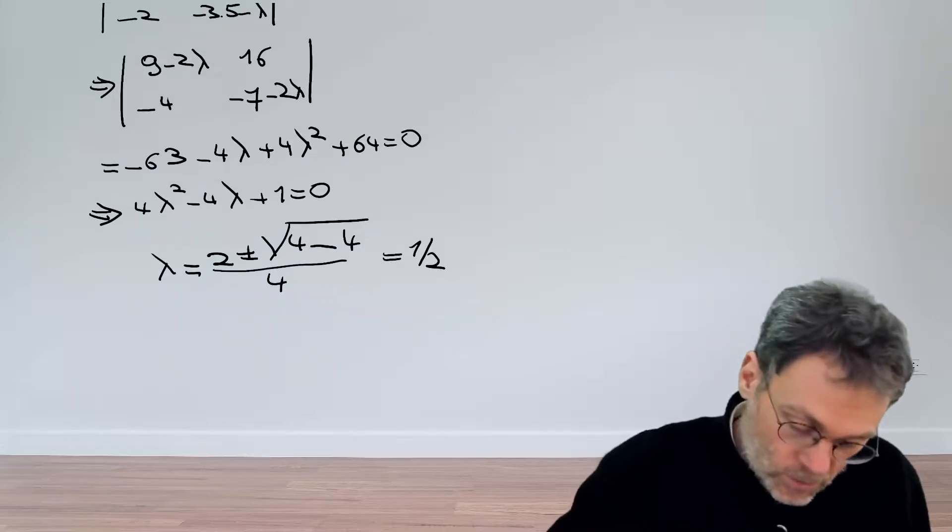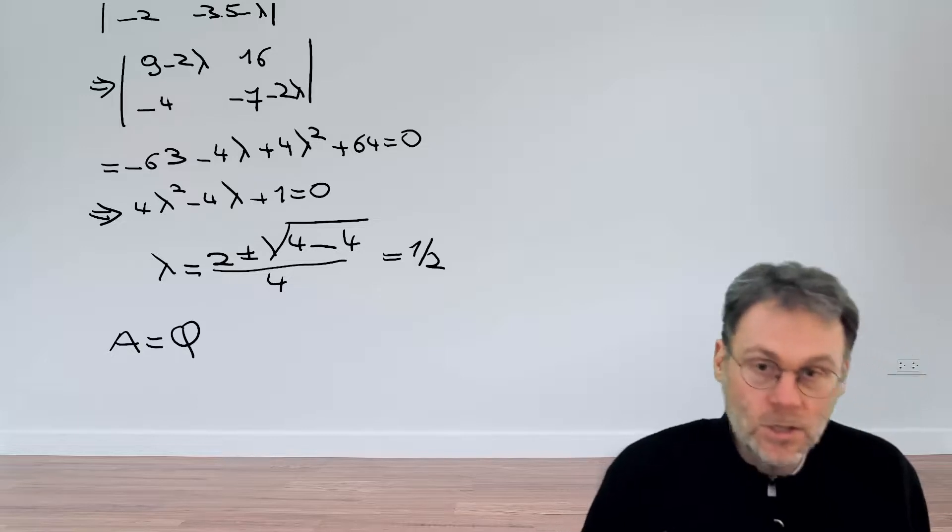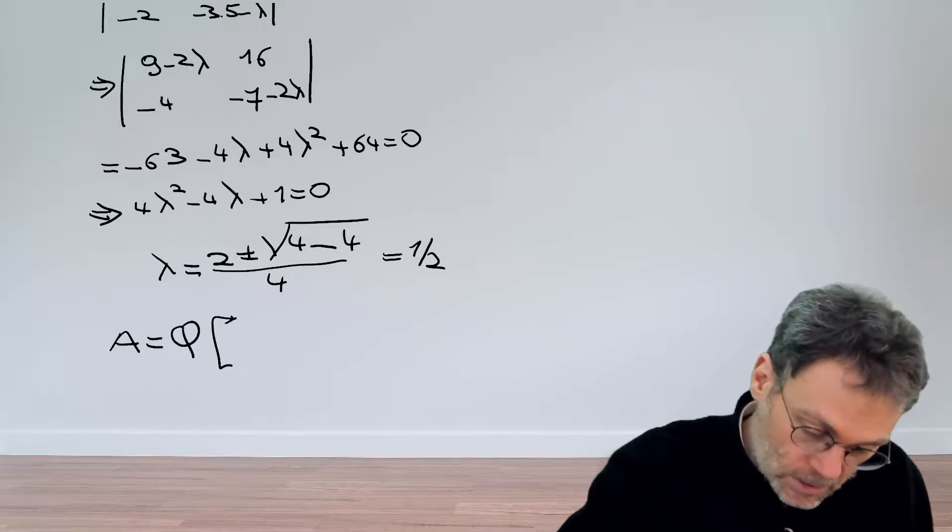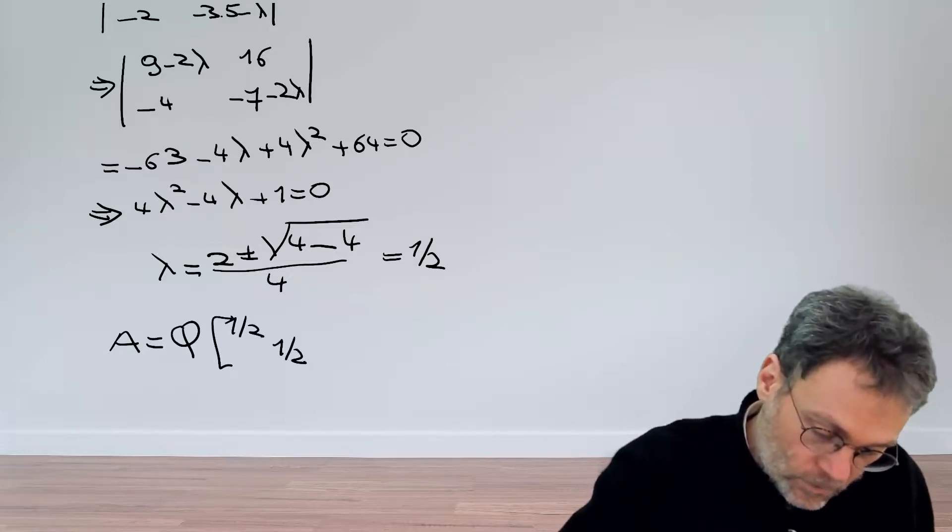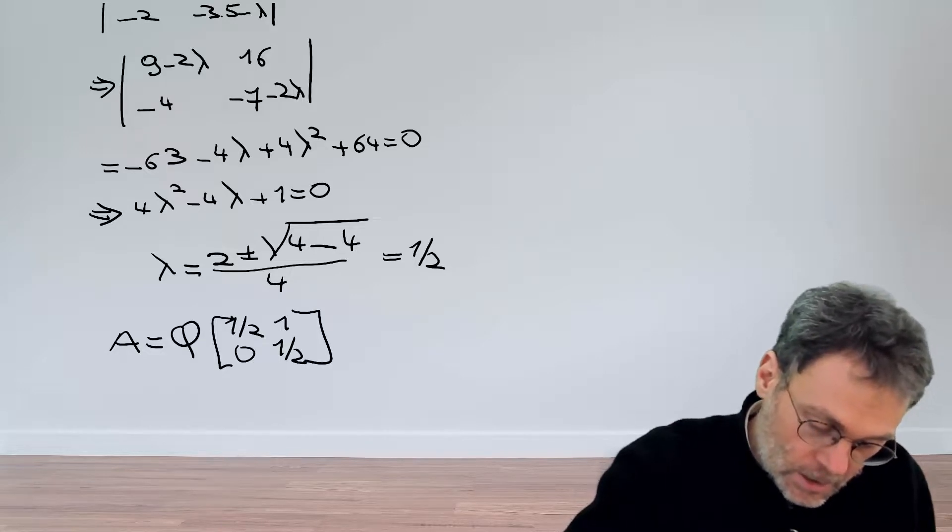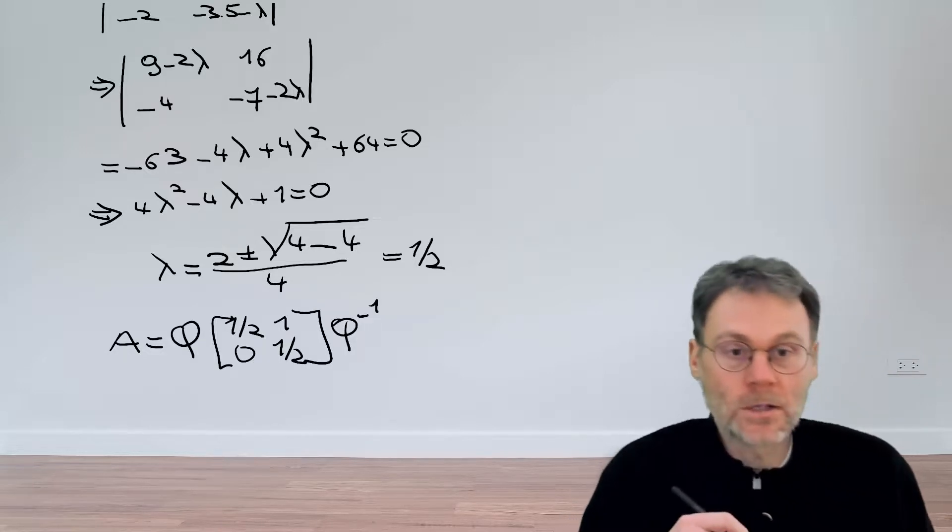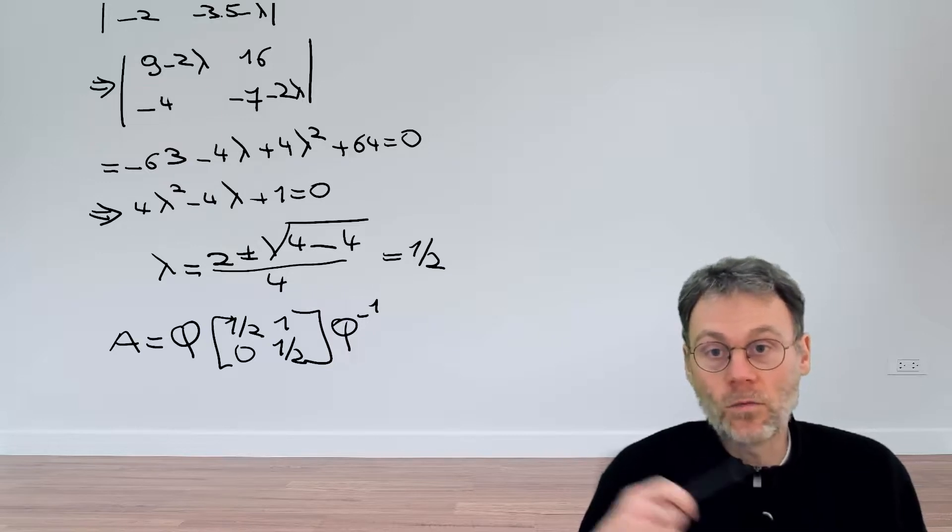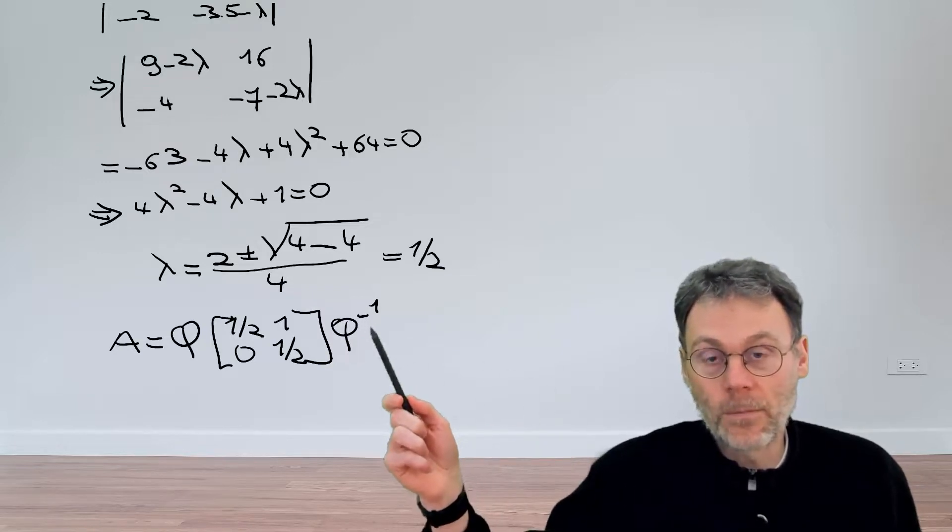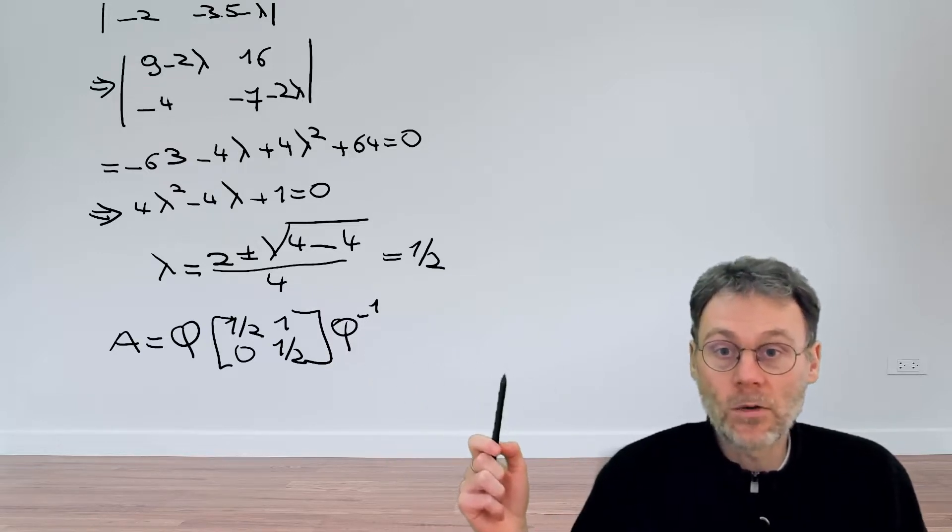This means that we can write our matrix A as a certain other matrix, and then 1/2, 1/2, and then Q^(-1). And then in another exercise we've seen that basically the same stability criteria holds in case you have different eigenvalues here.